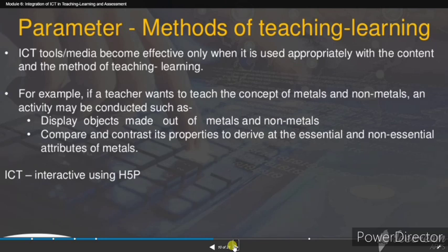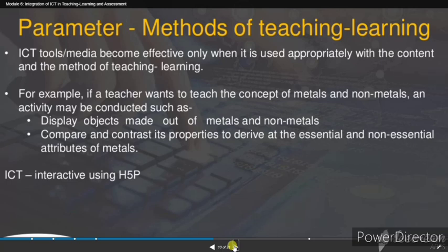The third parameter is the method of teaching and learning. For example, if a teacher wants to teach the concept of metals and non-metals, an activity may be conducted such as displaying objects made of metals and non-metals, emphasizing learning, and comparing and contrasting constructive properties to arrive at essential and non-essential attributes of matter. ICT tools like H5P can be used for interactive activities.